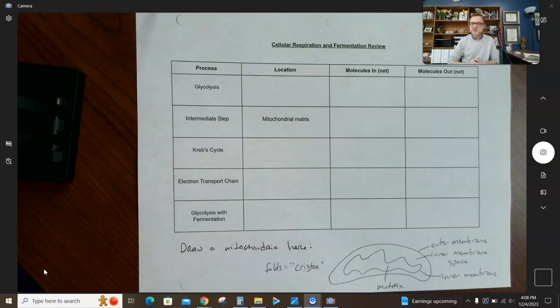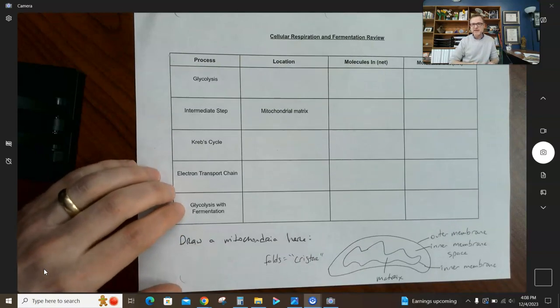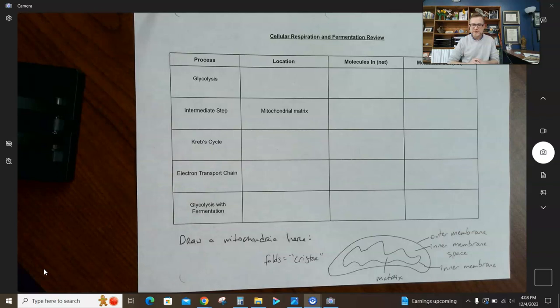This video is going to be a short one. This is basically just reviewing the processes, where they happen, what molecules go in and what molecules go out. So we do this handout in my class and we always begin at the bottom by drawing a mitochondria and labeling the parts. I have one already drawn for you.